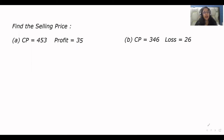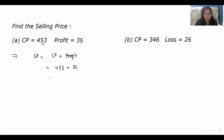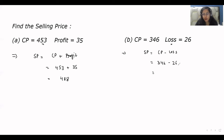Now let's move forward to the next question. If you have to find the selling price and the value of CP and profit is given, the formula for selling price is cost price plus profit. The value of cost price is 453 and the profit is 35.5, so when we add 453 and 35, we get 488. Suppose in any case you have a loss — the formula for calculating selling price when a loss is incurred is cost price minus loss. The value of cost price is 346 and the value of loss is 26, so when you subtract 346 and 26, you get 320.